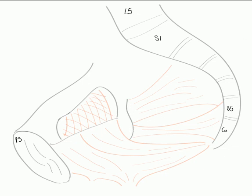Now let's detail those branches of the internal iliac. The common iliac artery is formed at the bifurcation of the aorta at about L4/L5, the intervertebral disc in between. Here we're looking at the right common iliac artery, which itself splits into two: an external and an internal iliac.